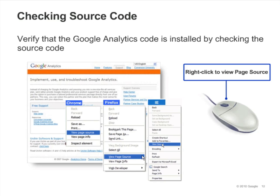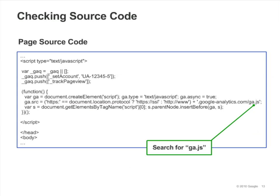This will open a new window that contains the source code for that page. Now search for ga.js — from the source code menu, select Edit and click the Find option. If you find the Google Analytics tracking code on your page, then it is likely that Google Analytics has been successfully installed on your site. Repeat this process across several pages on your site to make sure that your installation is complete.